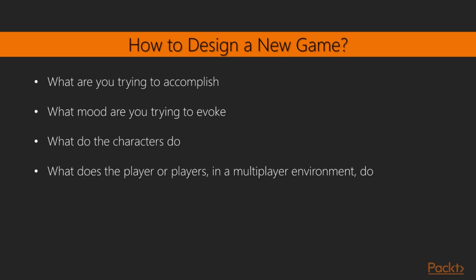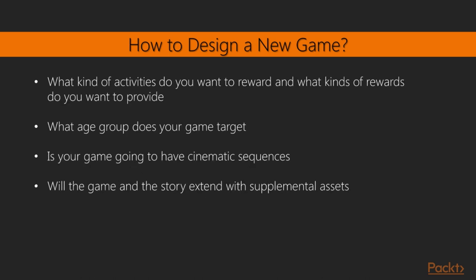Some questions to start the thinking process: What are you trying to accomplish? What mood are you trying to evoke? What do the characters do? What does the player do in a multiplayer environment? What kind of activities do you want to reward, and what kind of rewards do you want to provide? What age group does your game target? Is your game going to have cinematic sequences? Will the game and the story extend with supplemental assets? Keep a pen and paper handy to write down all ideas that flash in your mind.